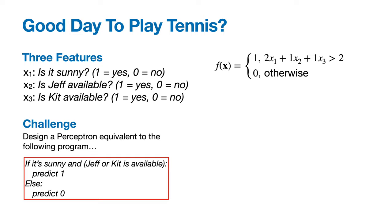If it's not sunny, there's no way we can get above the threshold. And if it is sunny, we get to 2, which means all it takes is one of Jeff or Kit to be available for us to get above 2. So we just built a perceptron that's equivalent to a simple logical program.